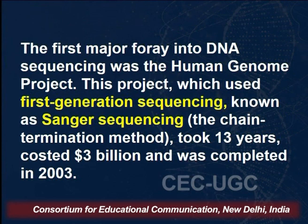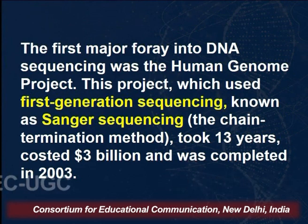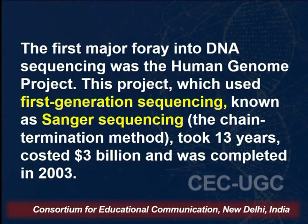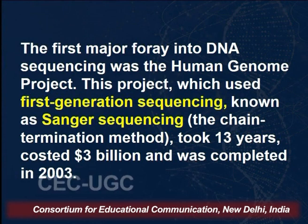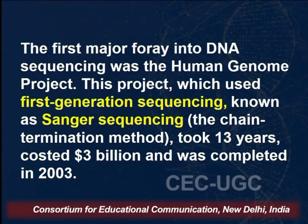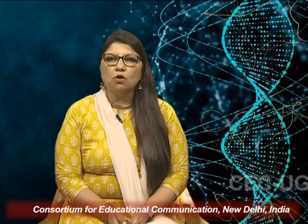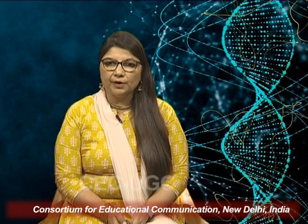The first major foray into DNA sequencing was the Human Genome Project. It was basically done using the first generation sequencing — the method very commonly called Sanger sequencing, the chain termination method. It took almost 13 years, costed some 3 billion dollars, and was completed in 2003. So it was a whole long process of DNA sequencing of the human genome, which was a major breakthrough.